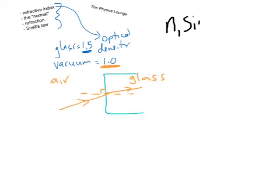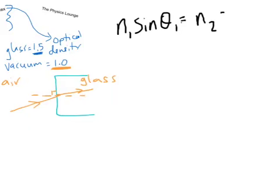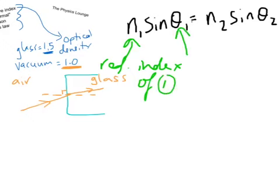Snell's law is a useful little equation. It goes something like this: n1 sin θ1 equals n2 sin θ2. And what this refers to is, I think you probably catch the refractive index in there. Actually you won't because we haven't told you that the symbol for refractive index is n. Refractive index of one thing, so that's refractive index of one. And this is the angle that it strikes the surface at.